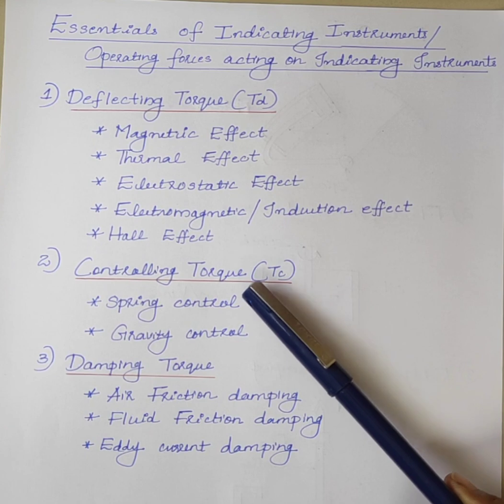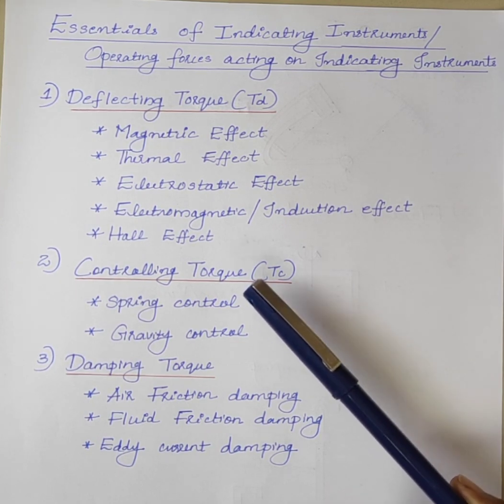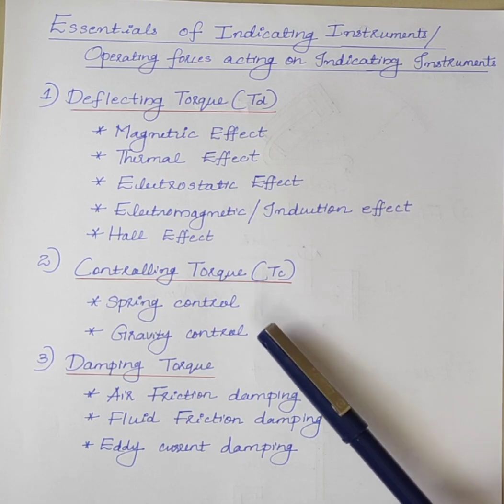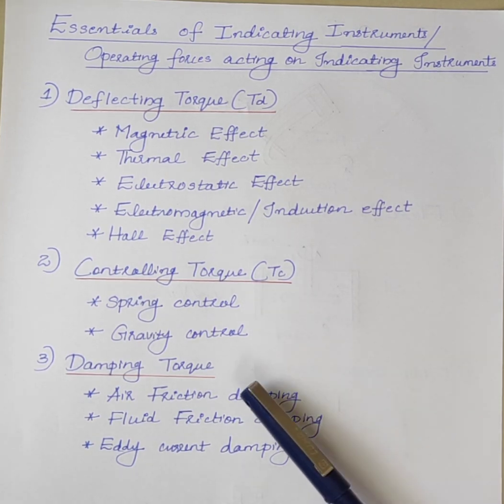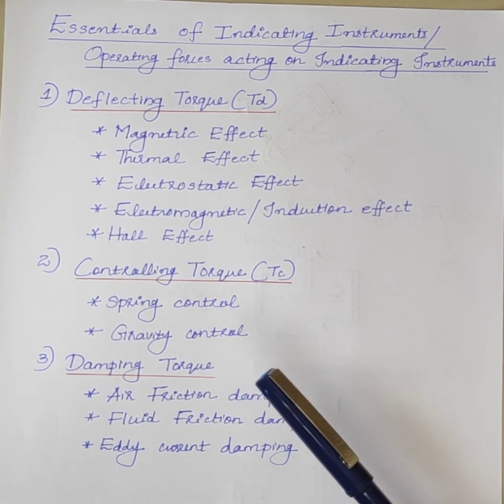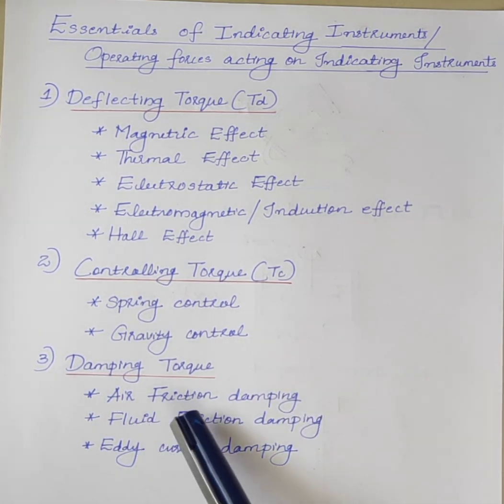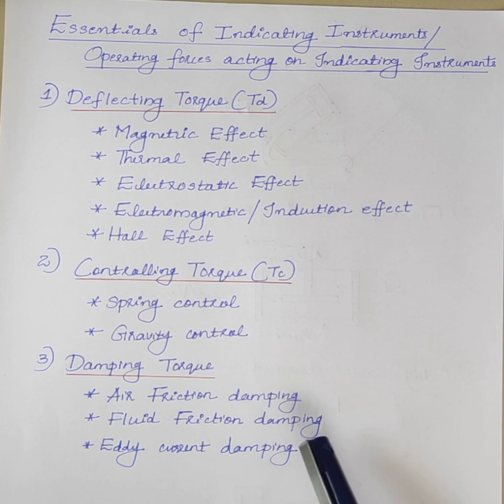Controlling Torque in indicating instruments are obtained by two methods: spring control and gravity control. Damping Torque in indicating instruments are obtained by air friction damping, fluid friction damping, and eddy current damping.